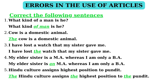In statement 4: 'My elder sister is a MA, whereas I am only a BA.' — This is an incorrect statement, where article 'a' is to be replaced with article 'an'. Because if a word begins with a consonant but gives the sound of a vowel, 'an' should be used before it. The correct statement is: 'My elder sister is an MA, whereas I am only a BA.'